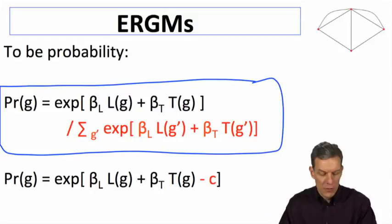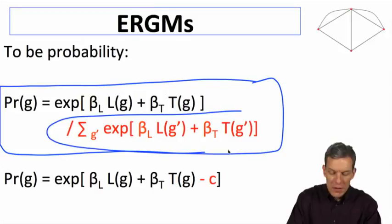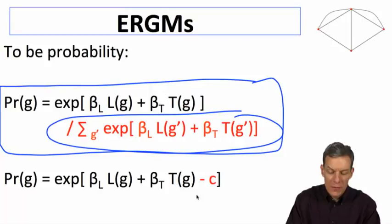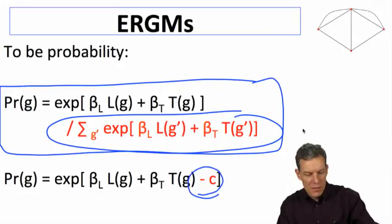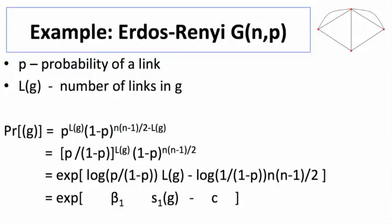Dividing through this thing, we could bring it in terms of the exponential function. Dividing by something is basically subtracting it inside the exponent, so you can write that as minus c, where c is going to be part of this expression.